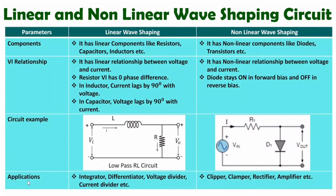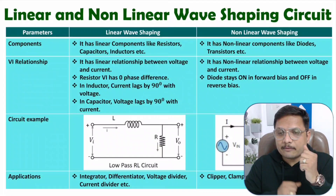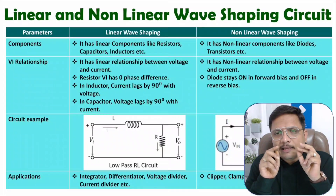Let us now look at applications. Linear wave shaping circuits include integrators, differentiators, voltage dividers, current dividers, high pass filters, and low pass filters — all made using resistors, capacitors, and inductors. Non-linear wave shaping circuit applications include clippers, clampers, rectifiers, and amplifiers. We can also have cycloconverters and inverters.